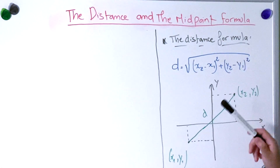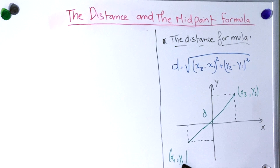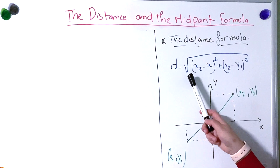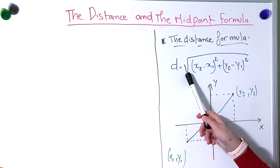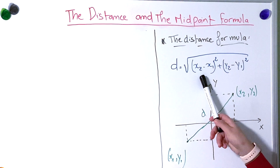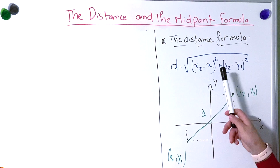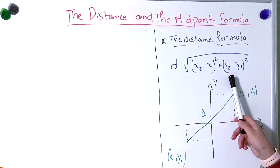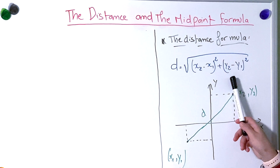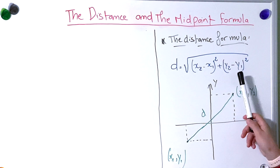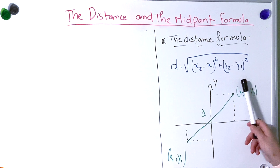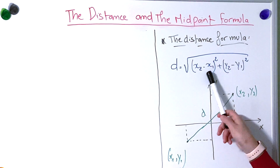The distance formula gives the distance between two points (x1, y1) and (x2, y2). To find it, we take the square of the difference x2 minus x1, plus the square of the difference y2 minus y1, and the principal square root of that sum is the distance.